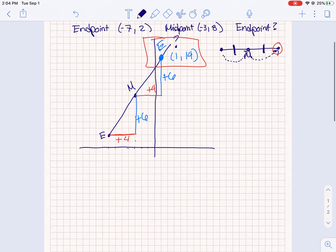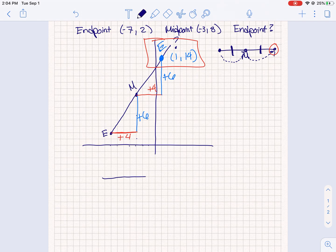So if I were to think about this kind of algebraically, yet still visual, here is my endpoint of (-7, 2). Here is my midpoint of (-3, 8). And I am trying to find where is this other endpoint here. So that is what we are trying to find.